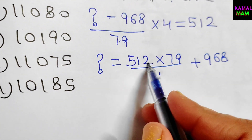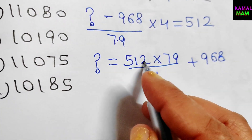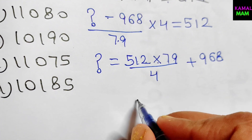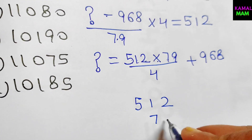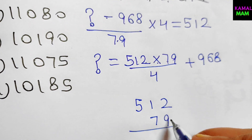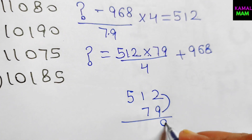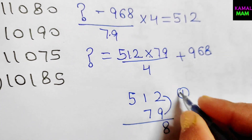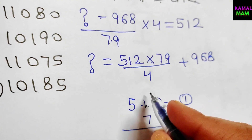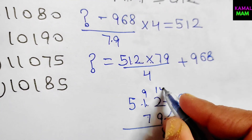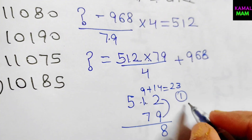Now we need to compute 512 multiplied by 79. Here is a super trick to solve three-digit by two-digit multiplication. Multiply the last digits: 2 times 9 is 18 — write 8, carry 1. Then cross-multiply: 1 times 9 is 9, and 7 times 2 is 14. Add them: 9 plus 14 is 23.